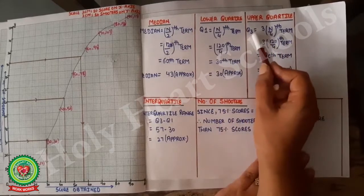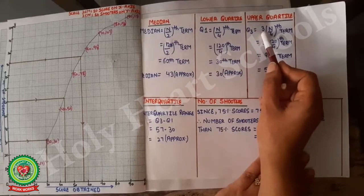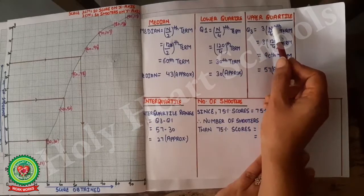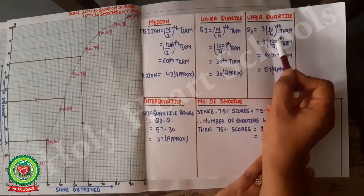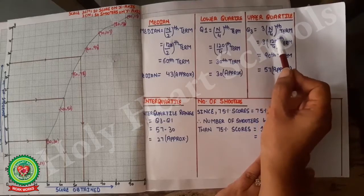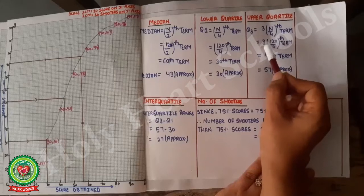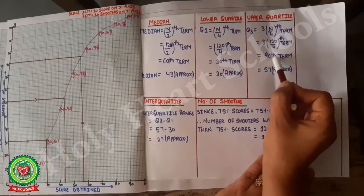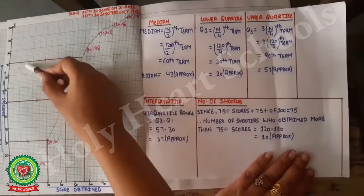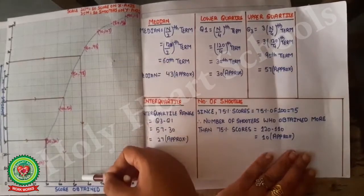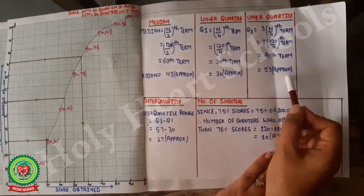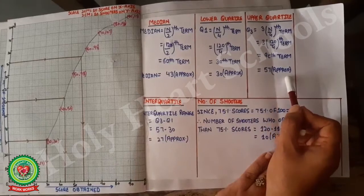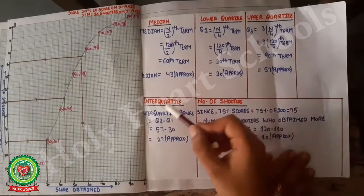The third part is the upper quartile. Its formula is Q3 = (3n/4)th term. With n = 120, we calculate 3×120/4 = 90th term. We again read the 90th term from the graph going from up to down, and the answer for Q3 is approximately 57.